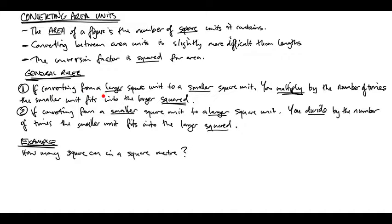So giving you general rules for it, if you're converting from a larger square unit to a smaller square unit, say meters to centimeters. We all know already that there's a hundred centimeters in a meter. But you cannot use the same hundred for square meters to centimeters. Because there are not just a hundred square centimeters in a square meter. You actually multiply this time by the number of times the smaller unit fits into the big. So keep in mind that hundred.